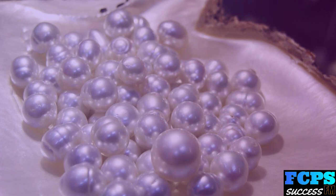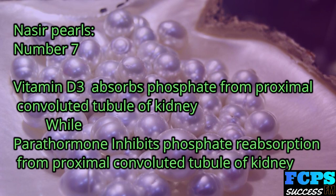Nasir Pearl number 7a: Vitamin D3 promotes phosphate absorption from the proximal convoluted tubule of the kidney, while parathyroid hormone inhibits phosphate reabsorption from the proximal convoluted tubule.